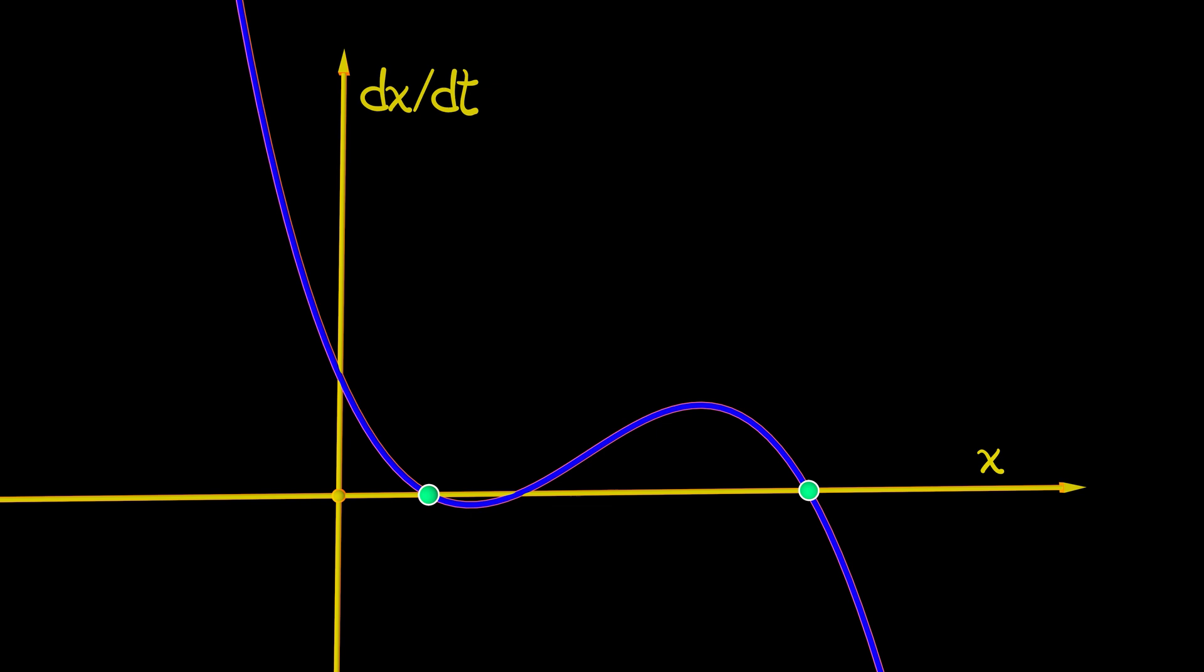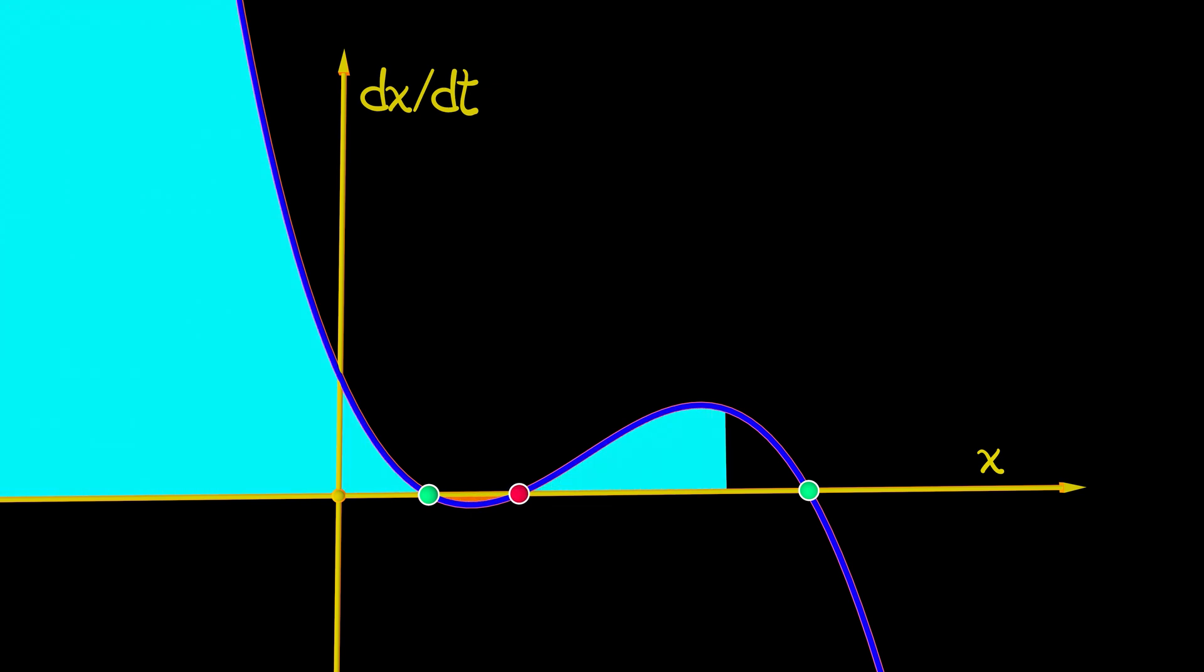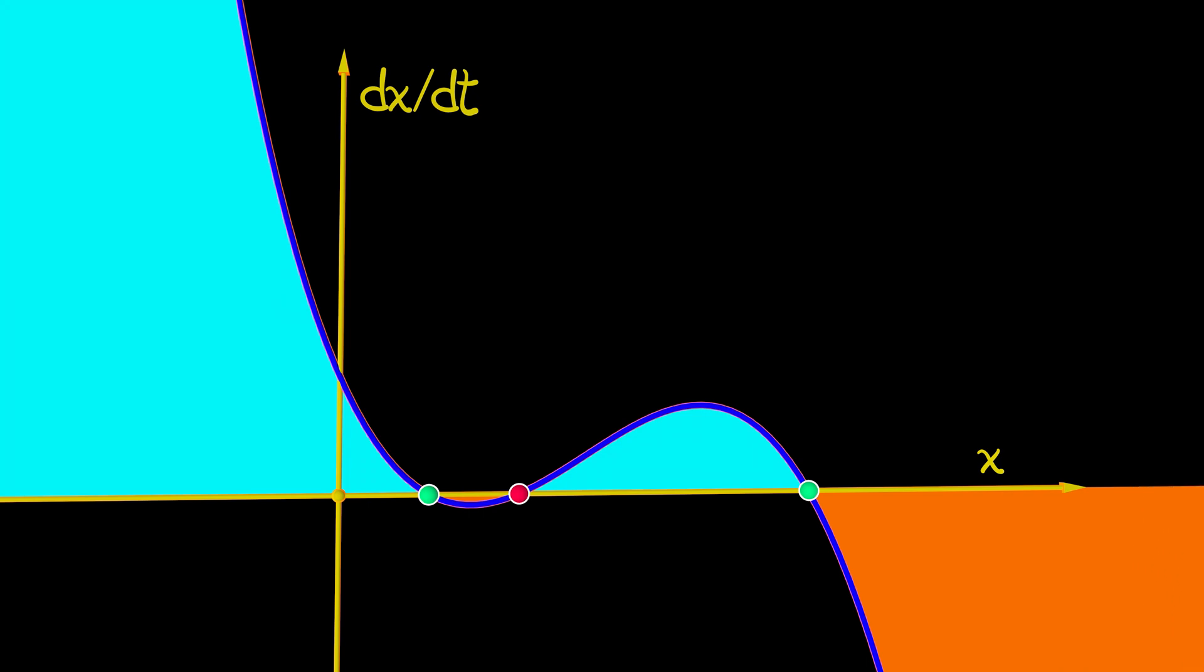And where f of x equals zero, well, that's where the equilibria are. And then in certain regions, dx dt is going to be positive. In other regions, it's going to be negative. And that's going to wind up telling us a lot about these equilibria.